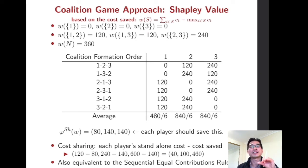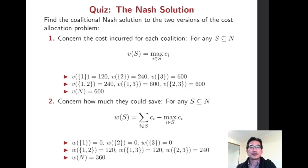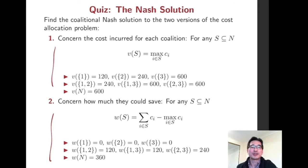Here we have a quiz. As mentioned, we have two different versions of cost allocation problems, and we can find coalition-less solutions if the core is not empty.